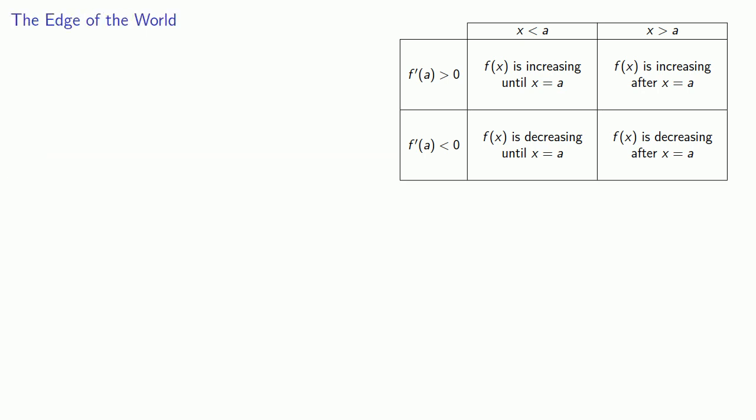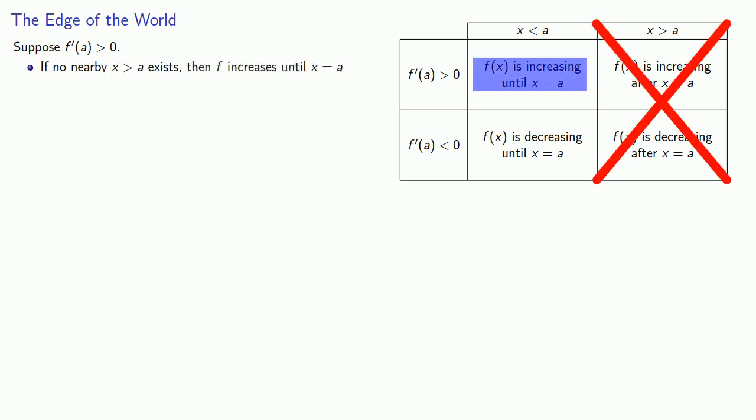Well, this conclusion is based on assuming that there are values of x that are both higher and lower than a. Suppose there aren't. Suppose we're at the edge of the world, so to speak. So suppose the derivative is greater than zero. If there's no value of x that's greater than a, then our function is going to increase up until it hits x equal a, and then it will stop, in some sense, at f(a). And so f(a) will be a local maximum value.